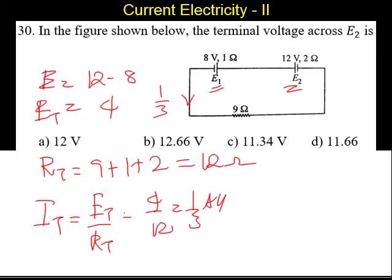If this is the current, the voltage across E2 we have to calculate. Then, using Ohm's law, we can say EMF of E2 equal to V2 plus I into the resistance R2.